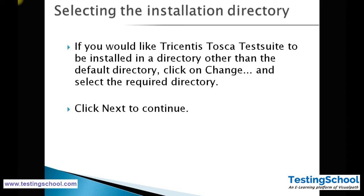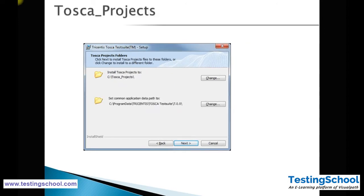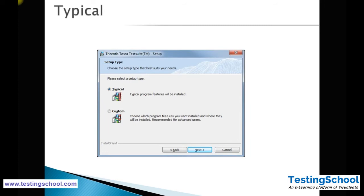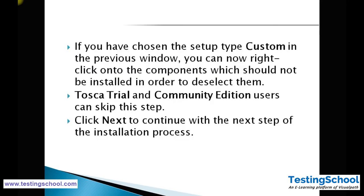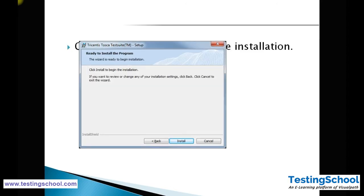Once you select the license type, go to the installation directory. There are two things: Tosca Projects and Application Data. If you want to change the default location, click the Change button. During setup, you have two options: Typical and Custom. Typical installation performs the default installation. If you choose Custom, you specify what software is required and can customize the required engines. Then click Install to install the required software.